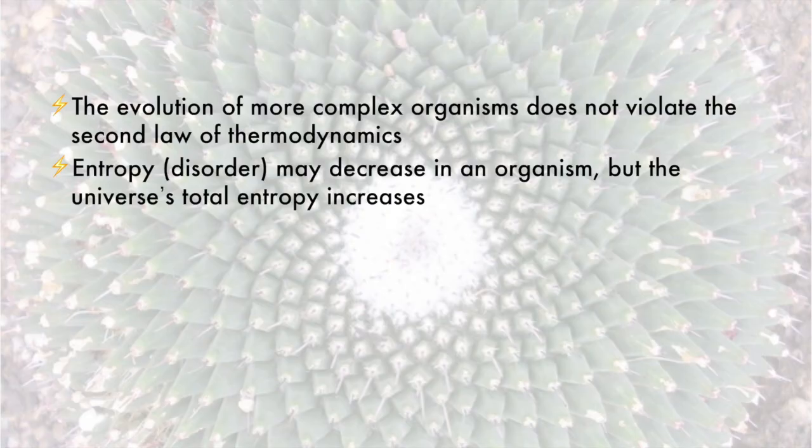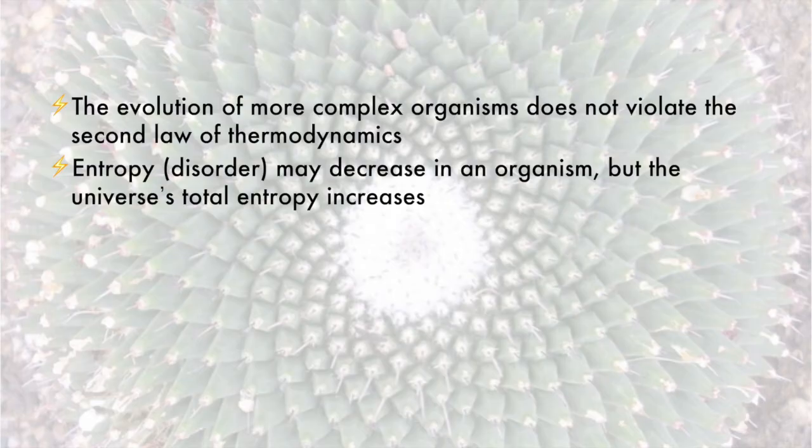One thing critics of evolution have said is that the evolution of more complex life forms from simpler ones violates the second law of thermodynamics. However, this is not the case, because organisms and ecosystems are not closed systems. The earth is constantly receiving additional energy from the sun, and while an organism may decrease the entropy locally, the total entropy of the universe increases more to offset that local decrease.